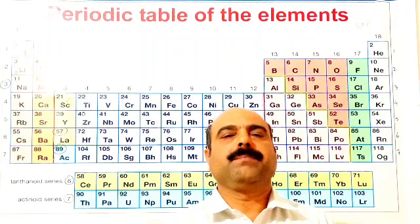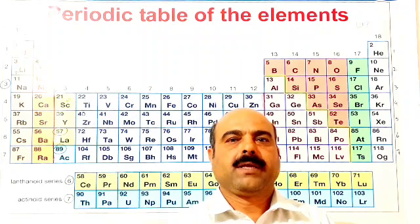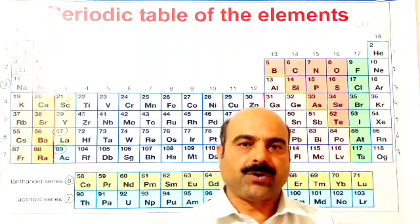the modern periodic table contains total 7 periods and 18 groups.